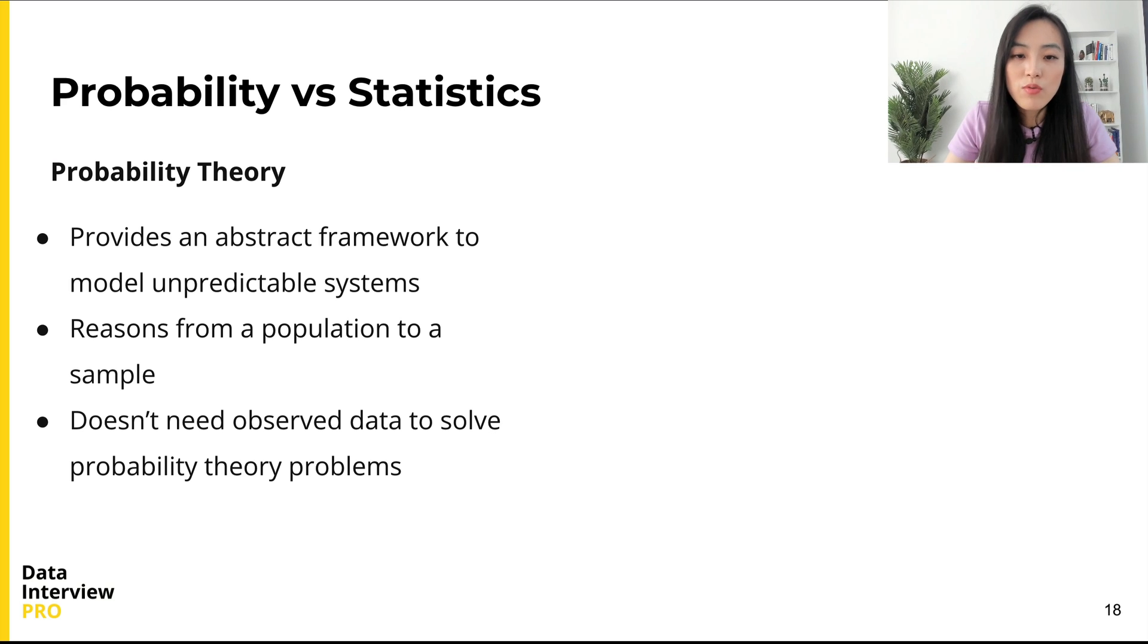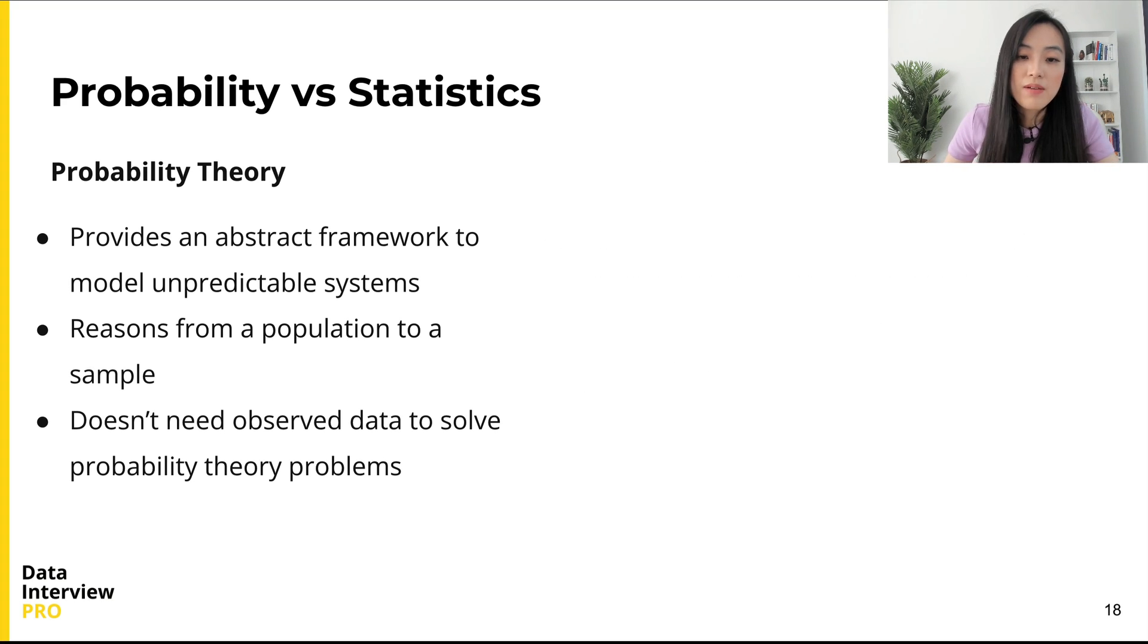So in summary, probability theory aims to provide an abstract framework to model seemingly unpredictable systems. We can use the framework to reason from a population to a sample. It is deductive reasoning, and we don't need observed data to solve probability problems.